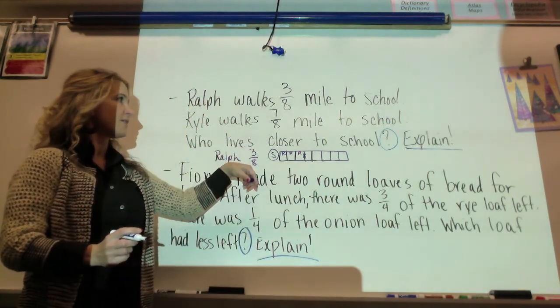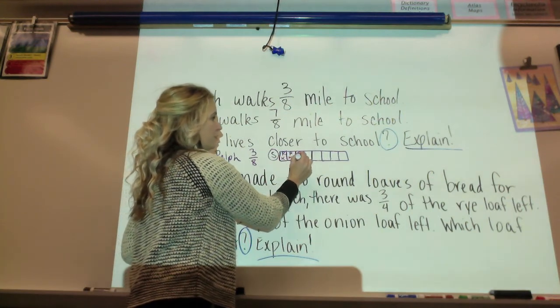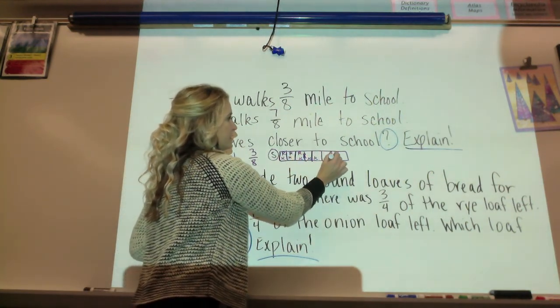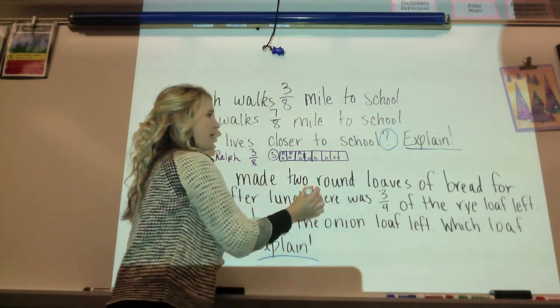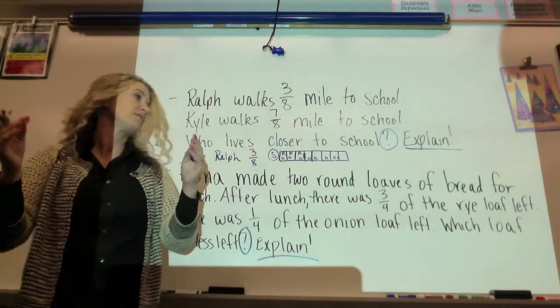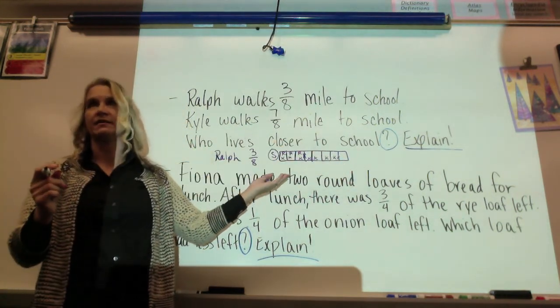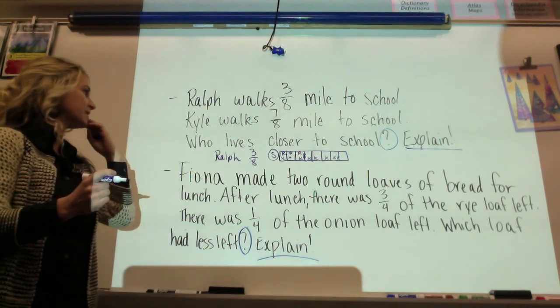Kyle walks seven-eighths of a mile, so we have to go one, two, three, four, five, six, seven, and he lives right there on the end. Who lives closer to the school looking at this one? Ralph, you can see it.